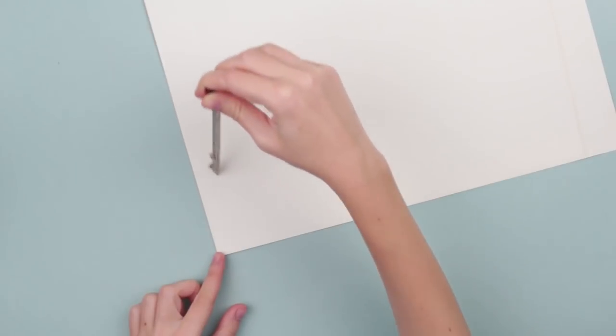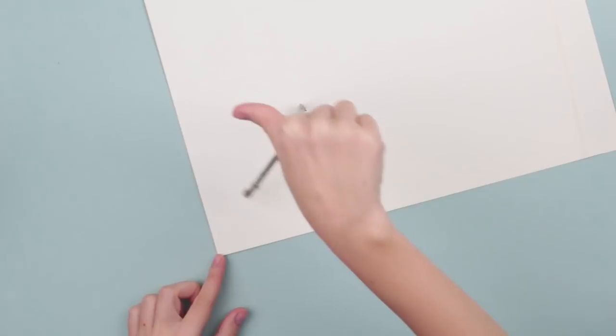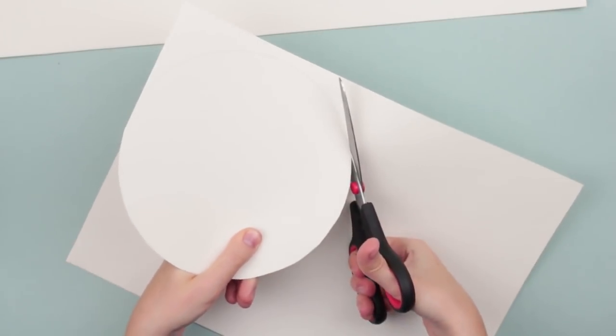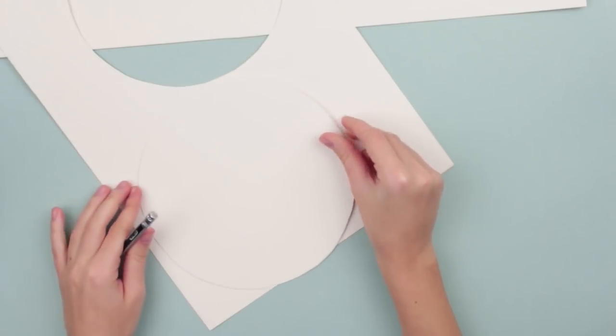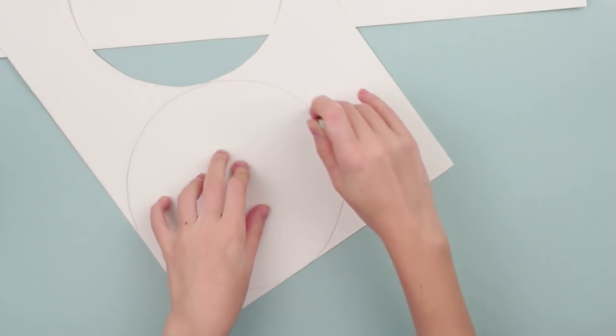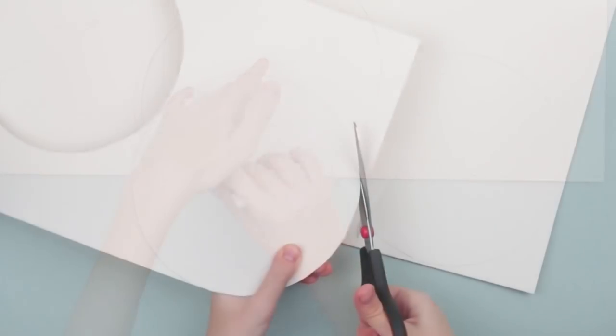Take a white paper sheet and draw a circle using a compass. Draw the circle near the edge to fit other elements on the paper. Cut out with scissors. Place the cut circle on the paper and trace. We need four equal details.